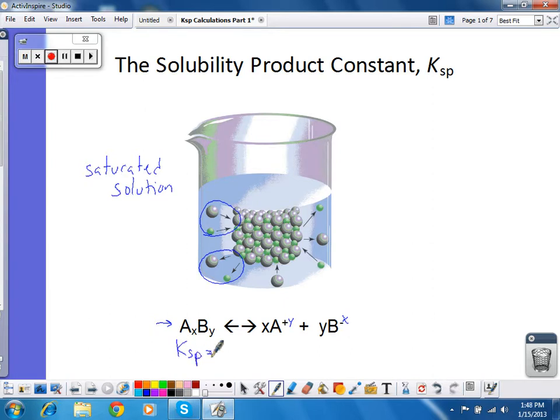And because it's solubility, it's called Ksp. And remember, Ksp, any k value is products over reactants. So, on the product side, I have the concentration of A to the x times the concentration of B to the y.